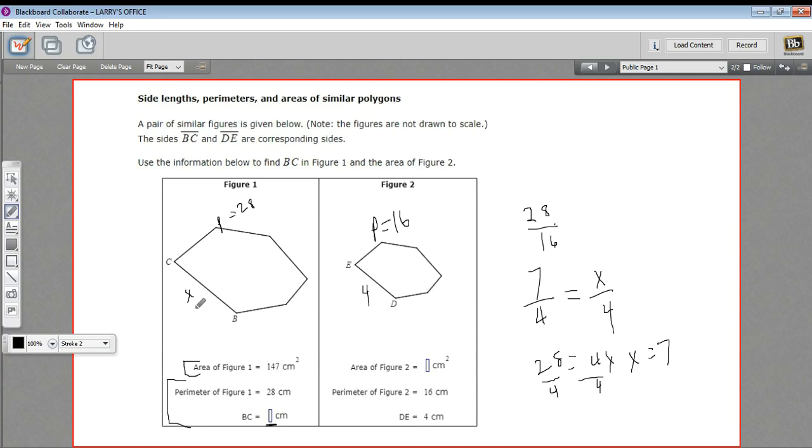So this side is 7. We can fill that in down here. So we've solved that. The other piece we need to fill in here is the area of the smaller polygon. We've got the area of the larger polygon.